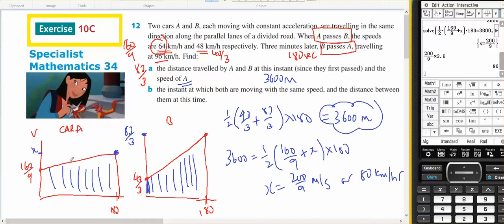Since that's 96, then I like 80, because it's less. Okay, that's part A done. Part B, the instant at which both are moving at the same speed, and the distance between them at the time.